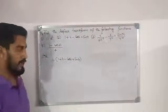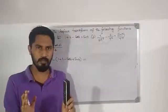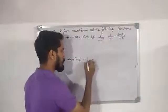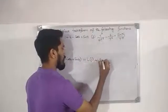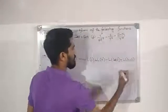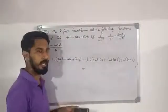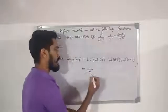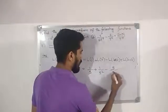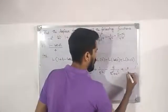Applying linearity, L{1 + t - cos(t) + sin(t)} equals L{1} plus L{t} minus L{cos(t)} plus L{sin(t)}, which equals 1/s plus 1/s² minus s/(s²+1) plus 1/(s²+1).